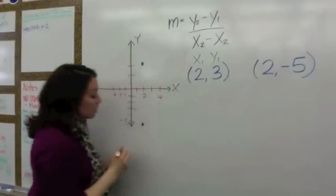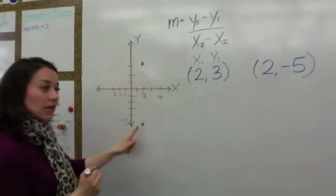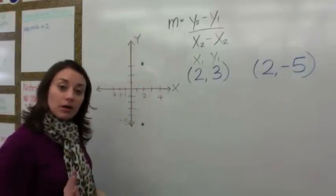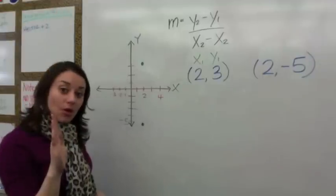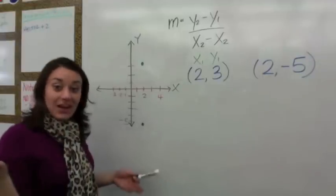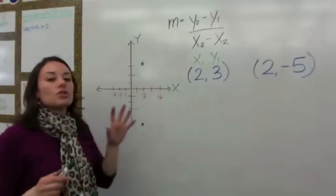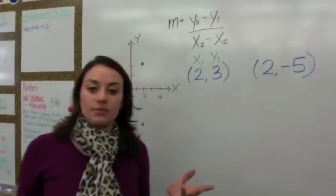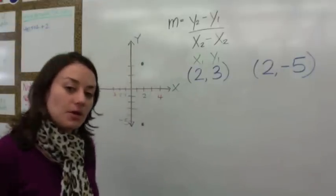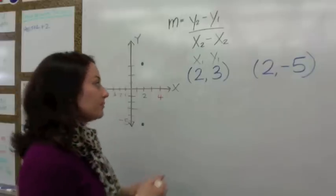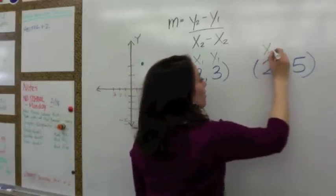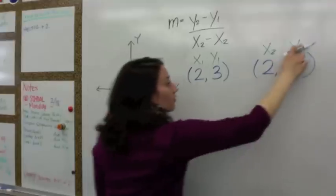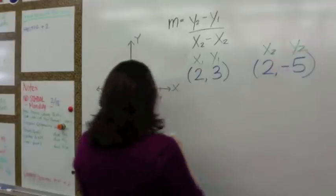Now you already know — if you connect these points, what kind of line are you going to have? What kind of slope will you have? No slope. Right, you're not going to have a slope. But let's show you why there is no slope, or why we call this undefined — because you hear that term a lot: undefined. So here's your second coordinate point, and now we're going to find the slope.